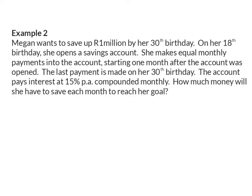Example 2. Megan wants to save up R1 million by her 30th birthday. On her 18th birthday, she opens a savings account. She makes equal monthly payments into the account, starting one month after the account was opened. The last payment is made on her 30th birthday. The account pays interest at 15% per annum, compounded monthly. How much money will she have to save each month to reach her goal?